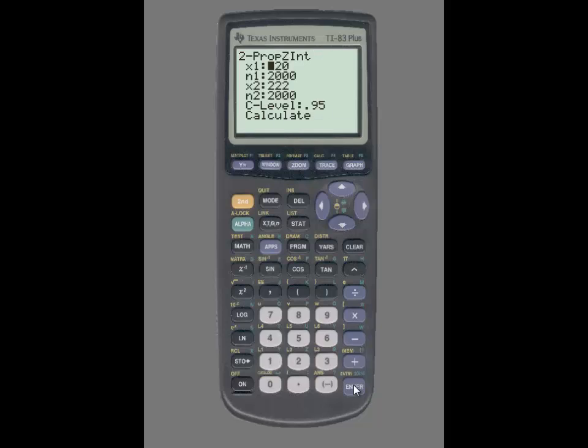Again, all of the information will transfer over. We simply need to change the level of confidence to 95%, and in this case it is already set at 95%. We can just go to Calculate, highlight that, press enter, and you will see the values of the confidence interval.